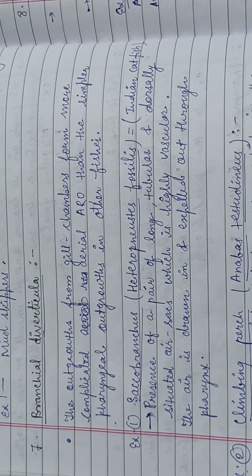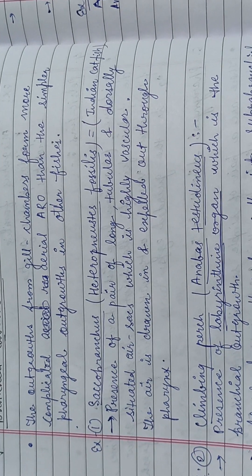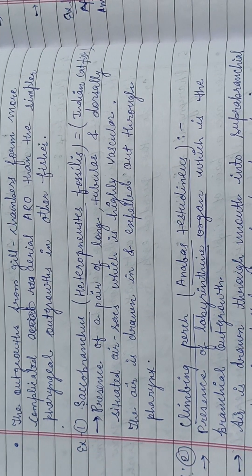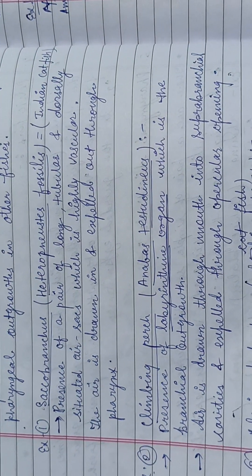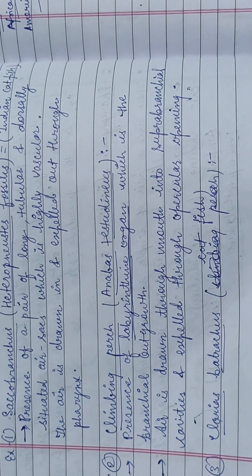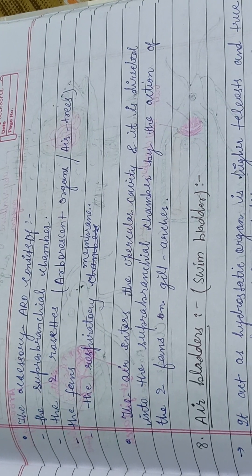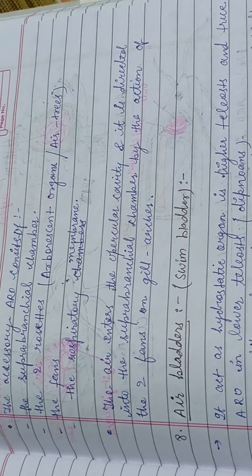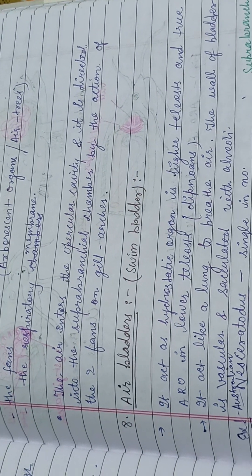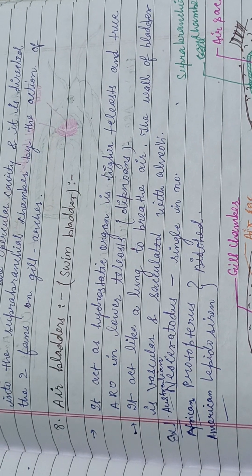Branchial diverticula are outgrowths of the gill chamber that form more complicated aerial ARO than the simpler pharyngeal outgrowth in other fishes. Examples are Saccobranchus, climbing perch also known as Anabas testudineus, and Clarias batrachus catfishes. The air enters the opercular cavity and goes directly into the subbranchial and suprabranchial chambers by the action of two fans on the gill arches.